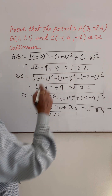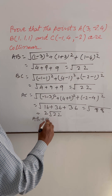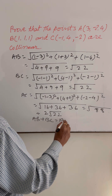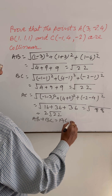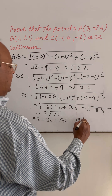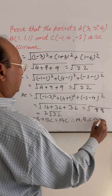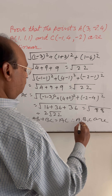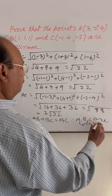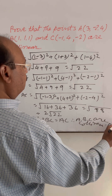So here we get AB + BC = √22 + √22 = 2√22 = AC. Therefore, A, B, and C are collinear. Proved.